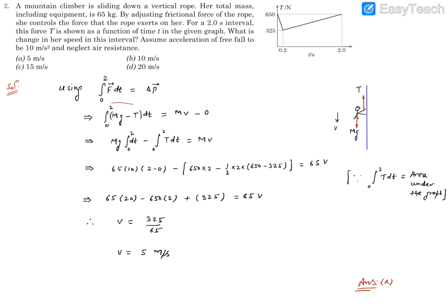Now net force in the downward direction is mg minus T. So we can integrate this thing. mg is a constant which can be taken outside, and this will be T, that is 2 minus the integration T dt from 0 to 2.